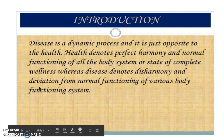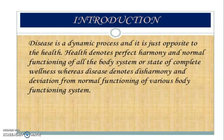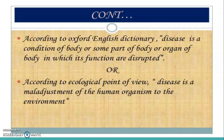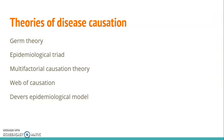So what is a disease? It is a dynamic process — it is just opposite to health. Health is a perfect harmony whereas disease denotes a disharmony from a normal functioning body. As per the dictionary, disease is a condition of the body, or some part of the body or an organ, which is functioned or disrupted. According to the ecological point of view, disease is a maladjustment of the human organism to the environment.